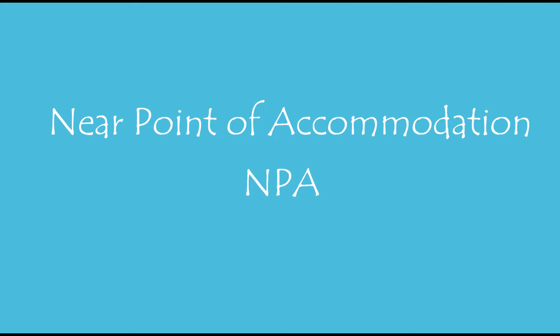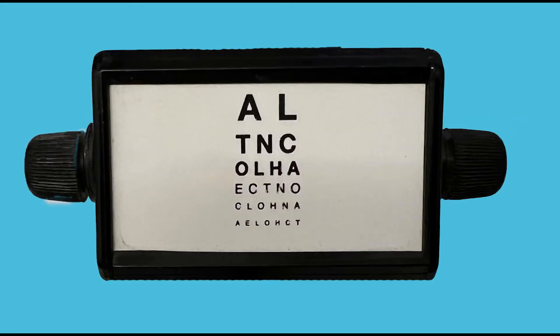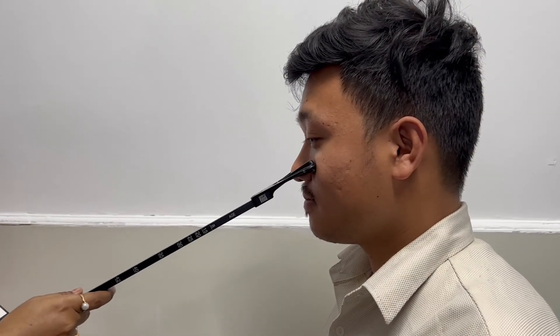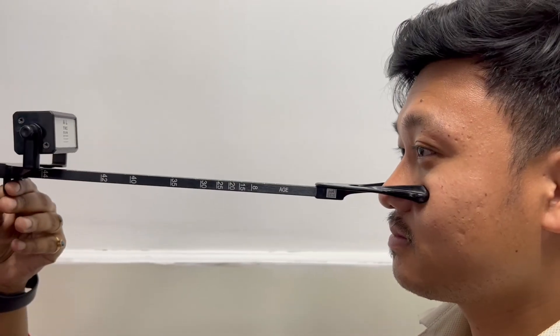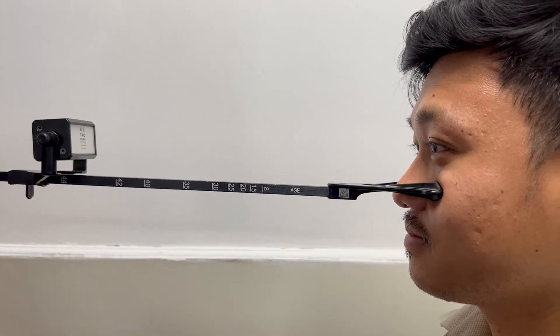To measure the near point of accommodation, the reduced Snellen chart is often used. The patient and the examiner should maintain the same eye level and the patient should sit straight in his position. The examiner holds the ruler and gently places the cheek rest of R.A.F. ruler on the inferior orbital margin and keeps the ruler straight.